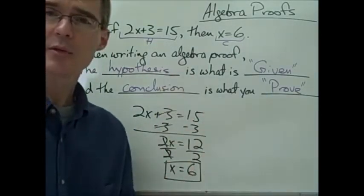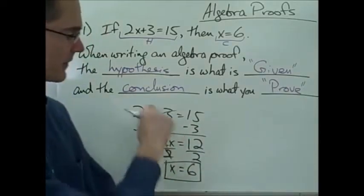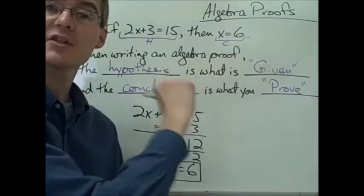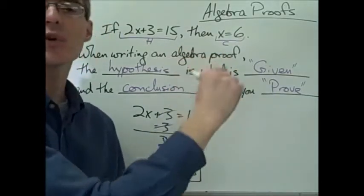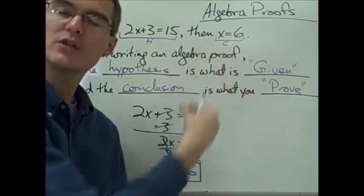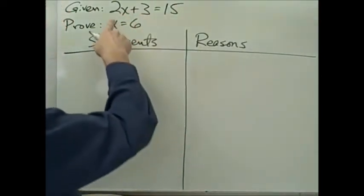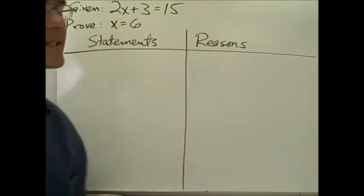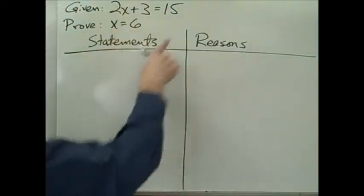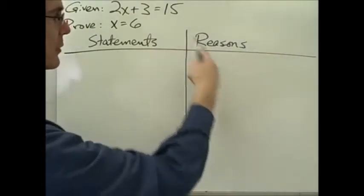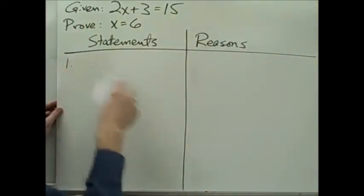That's essentially what we're going to be doing in algebra proofs, except each individual step is going to have its own line. As we do each step solving the equation, we're going to write down a reason for each one of our steps. Here's our equation: given 2x plus 3 equals 15, prove x equals 6. A two-column proof uses a T-chart with one column labeled 'statements' and the other labeled 'reasons.'